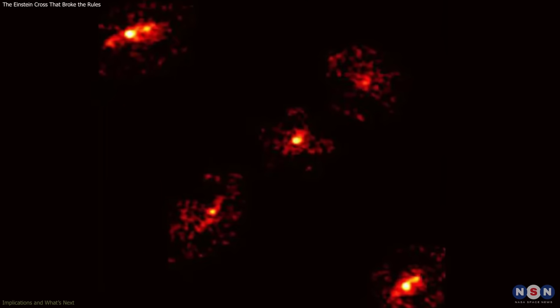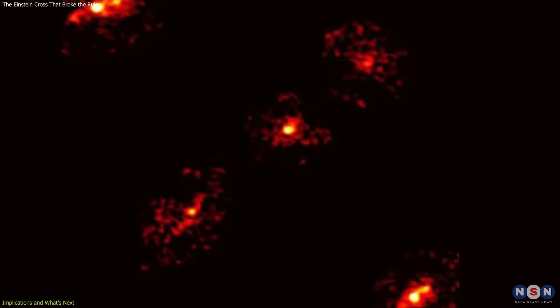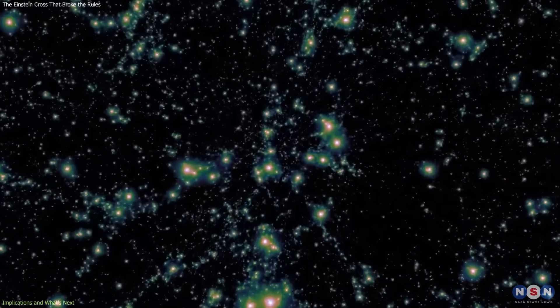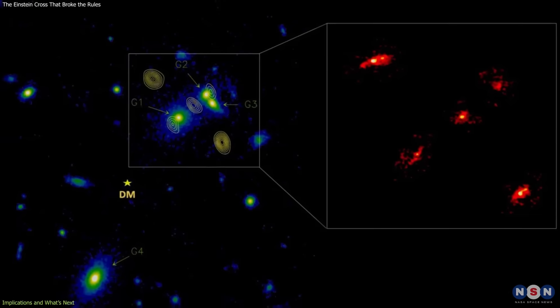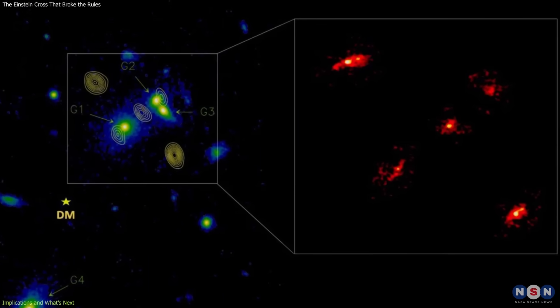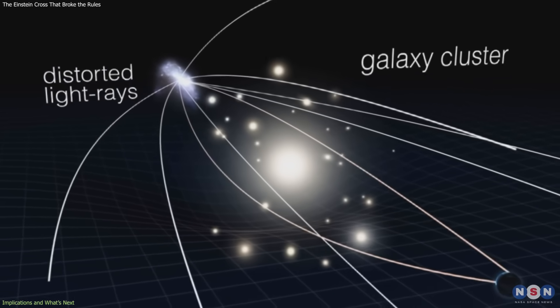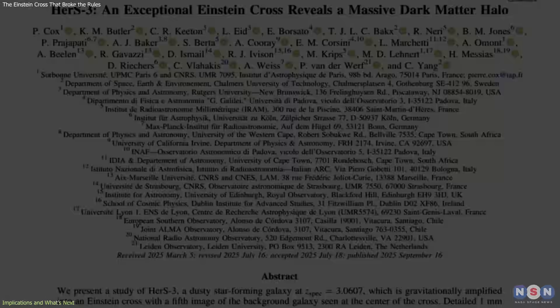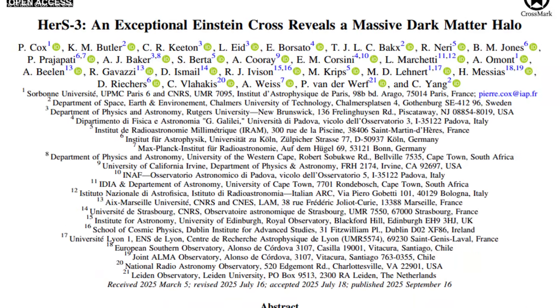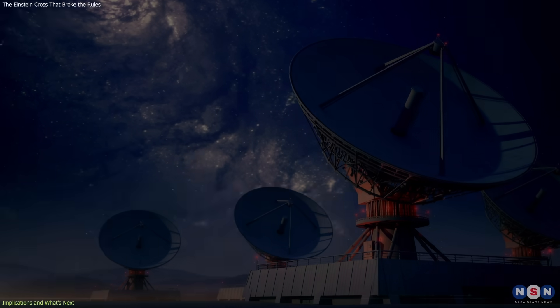The unusual Einstein cross is more than a striking visual. It serves as a test case for probing dark matter in ways few other systems can. By analyzing the positions and brightness of the images, astronomers gain precise information about the amount and distribution of mass in the lensing group. The research team has gone further, making testable predictions. For example,